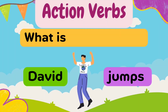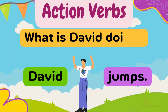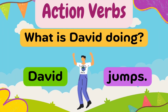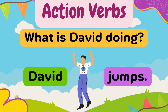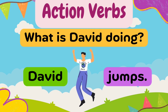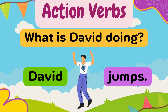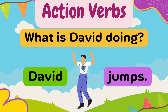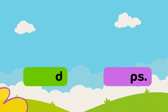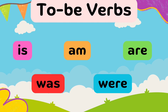Previously, we learned action verbs. Action verbs tell us what something or someone does. For example, David jumps. Let's learn all about to be verbs.